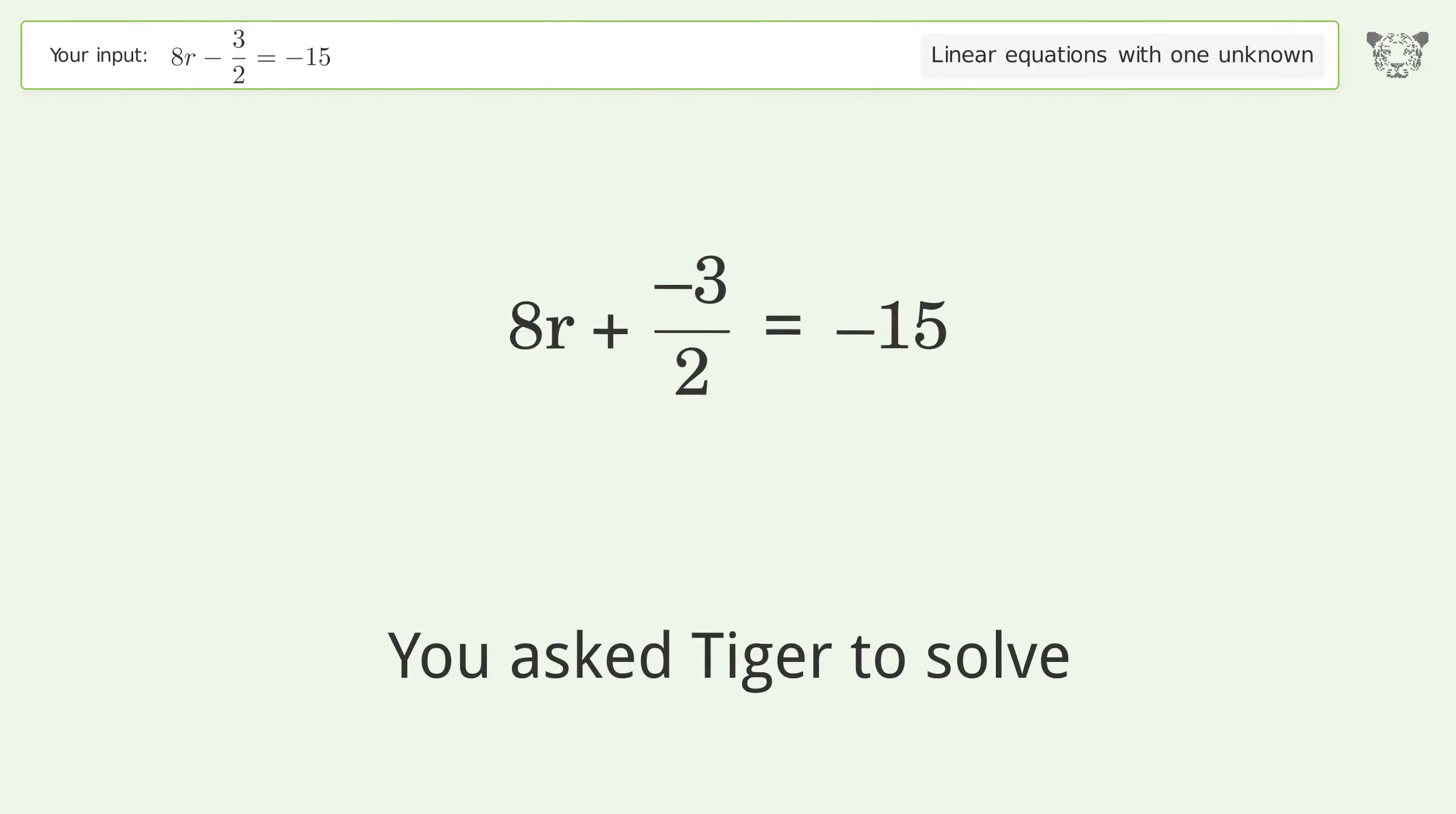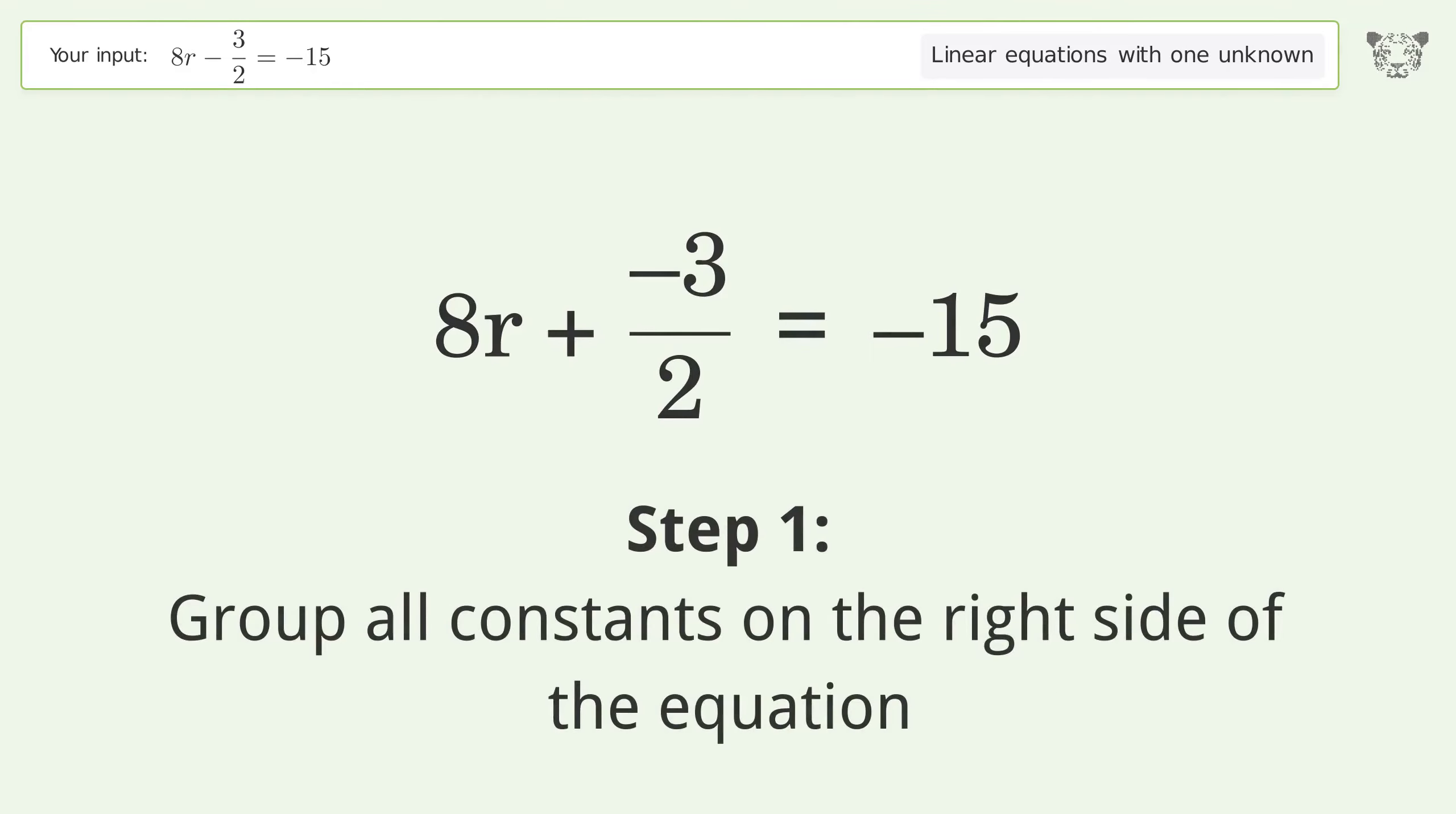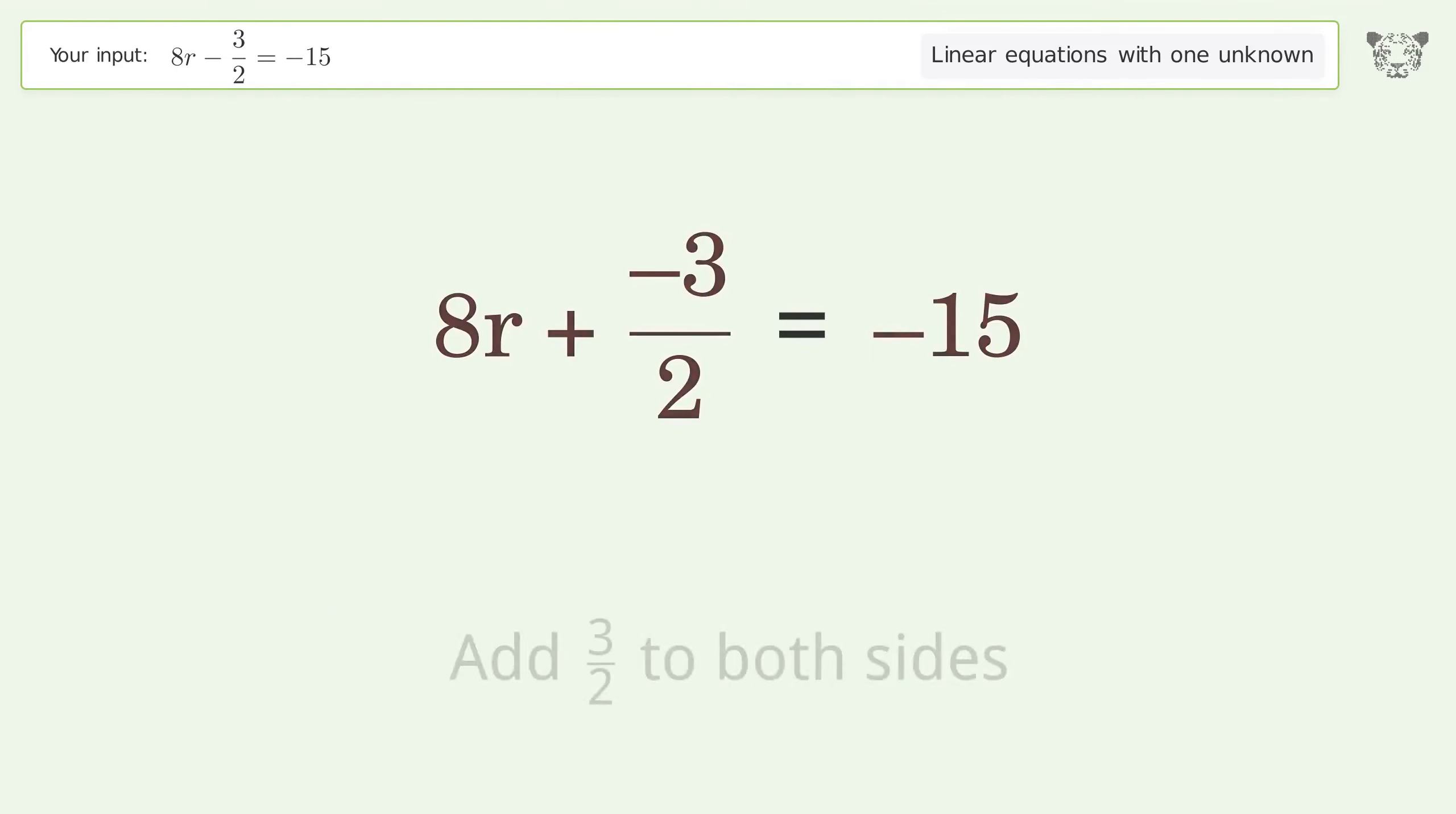You asked Tiger to solve this. It deals with linear equations with one unknown. The final result is r equals negative 27 over 16. Let's solve it step by step. Group all constants on the right side of the equation. Add 3 over 2 to both sides.